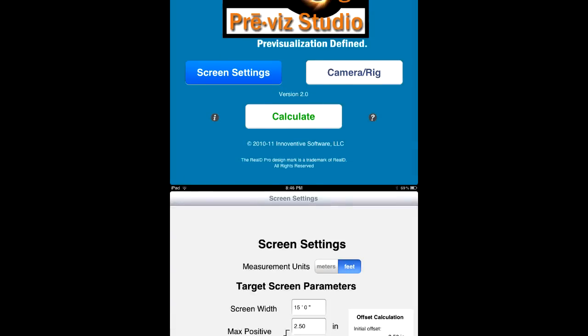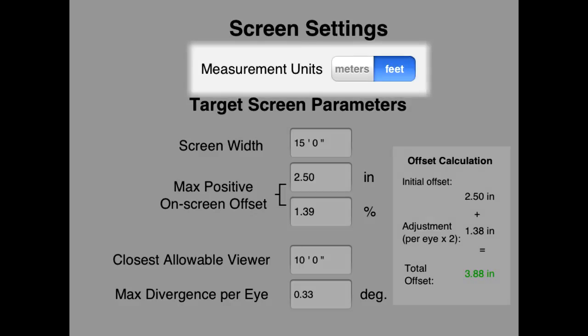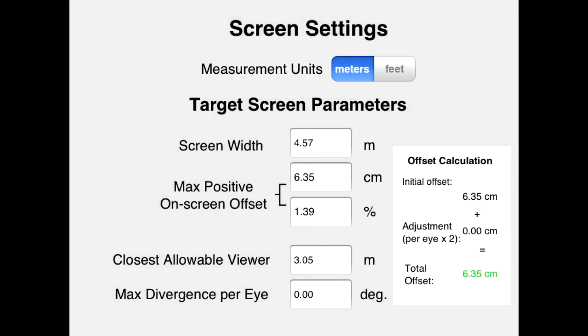So, let's get right to it. The calculator can work either in meters or feet, so you can set it to the units you generally use or the ones that the specific shoot you're on is using. You switch between the units simply by clicking this control, and you'll see all the values automatically change to reflect the selected units.